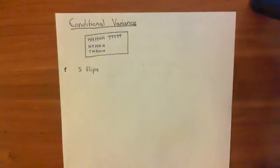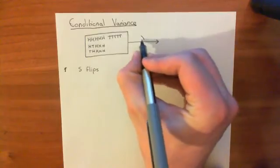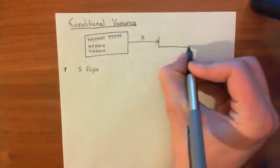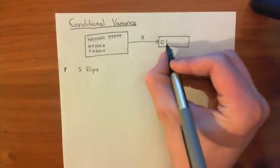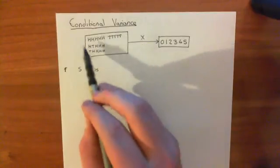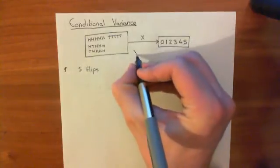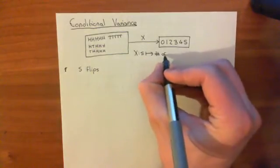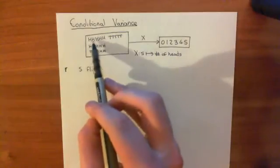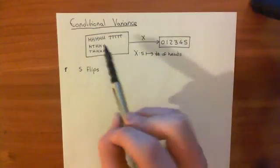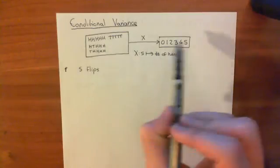So you're going to have 32 possibilities. But we can then set up a random variable X, which is going to map every single outcome onto the number of heads. The possibilities for that are 0, 1, 2, 3, 4, or 5. So this random variable X maps every outcome onto the number of heads you got overall when you flipped the coin five times. For example, five heads maps to 5, five tails maps to 0, and outcomes with four heads map to 4.